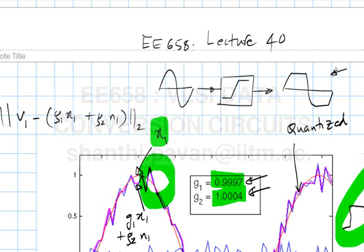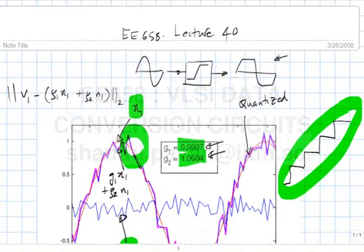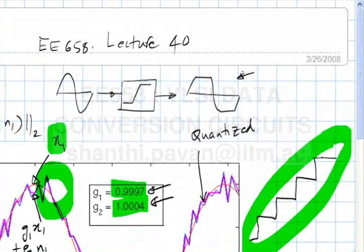If the input was a pure tone, then doing the minimum mean square fit between the output and the input is equivalent to taking the Fourier series and removing all the harmonics except the fundamental. This is an example of linearizing a nonlinear element with a single input, and the same thing can be done for multiple inputs.